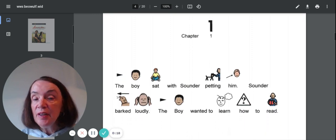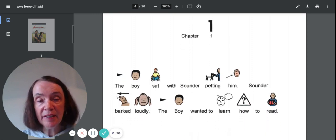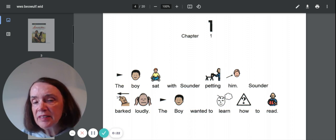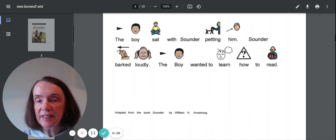Chapter one. The boy sat with Sounder petting him. Sounder barked loudly. The boy wanted to learn how to read.